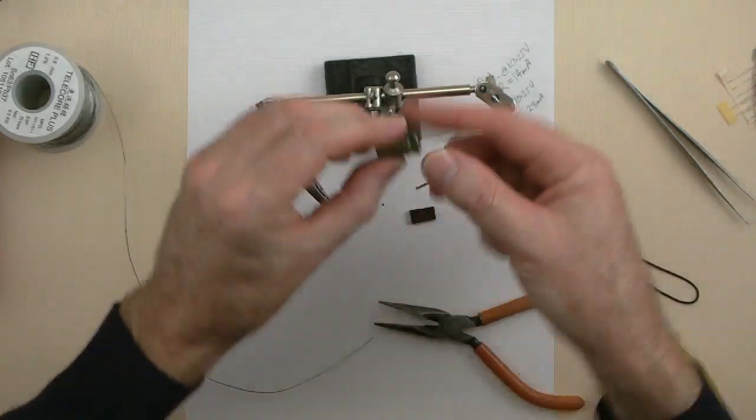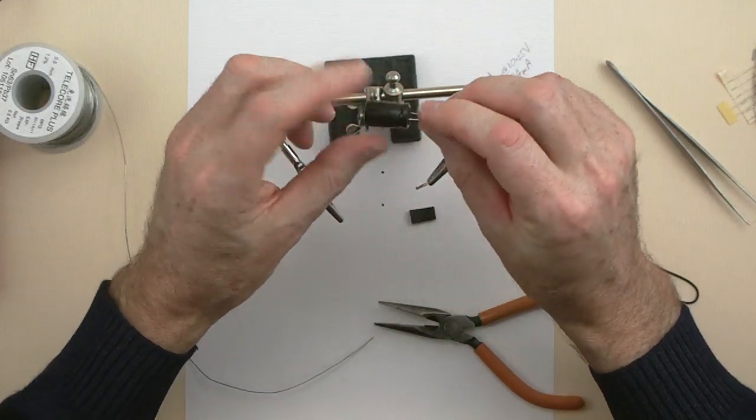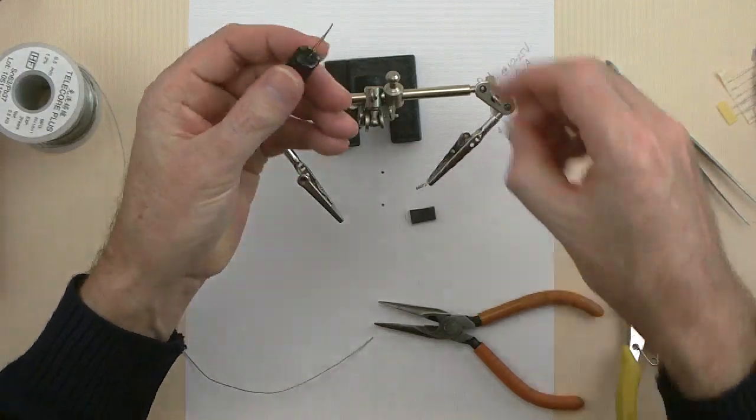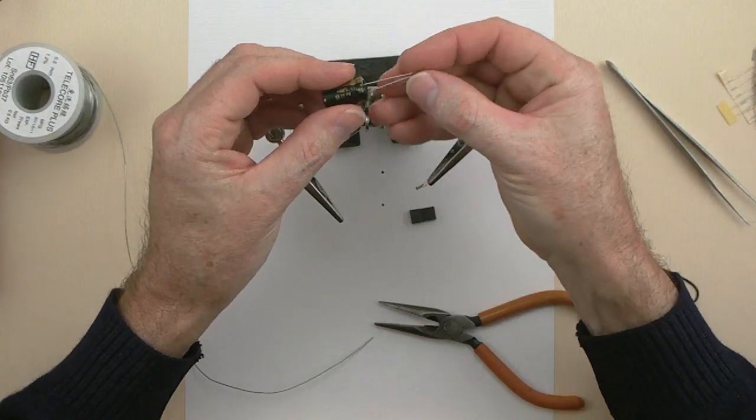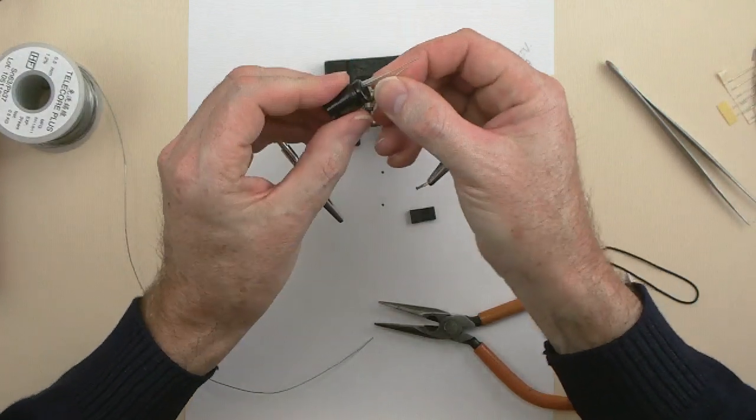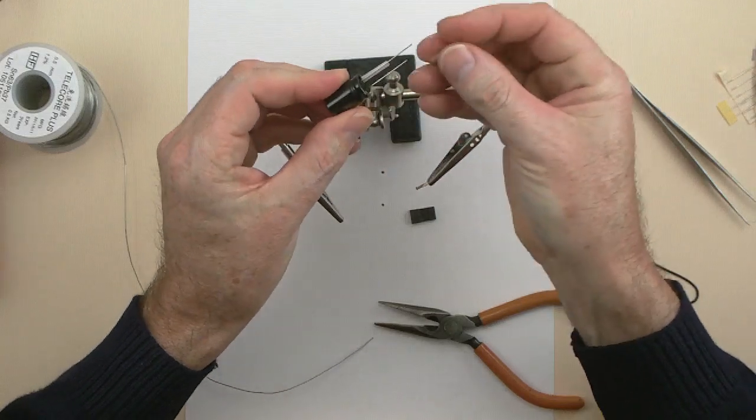Now I've got a capacitor here. 6.3 volt, 3300 microfarad. It's typically a 5 volt type filter capacitor.